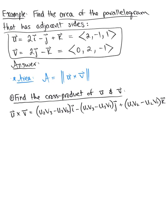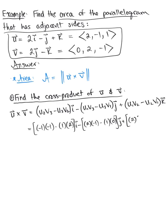Plugging in the components of the given vectors, we have: (-1)(-1) - (1)(2) times unit vector i, minus (2)(-1) - (1)(0) times unit vector j, plus (2)(2) - (-1)(0) times unit vector k.